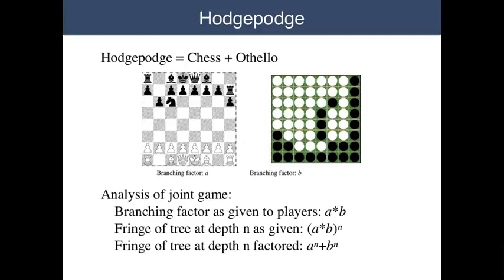Before we leave the concept, I want to give one example of metagaming. The example here is called game decomposition, or sometimes factoring. Consider the example of HodgePodge. HodgePodge is actually two games glued together — here we show chess and Othello, but it could be any two games. One move in a game of HodgePodge corresponds to one move on each of the two constituent games. Winning requires winning at least one of the two games while not losing the other. What makes HodgePodge interesting is that it's factorable — it can be divided into two independent games. Realizing this can have dramatic effect.